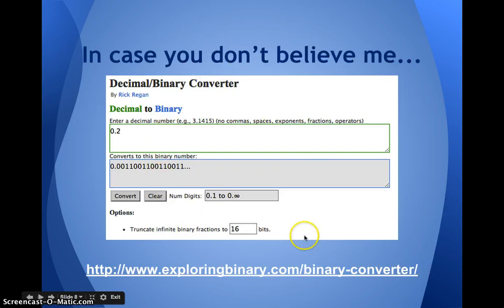I found a converter so that I wouldn't have to figure this out one place value at a time. I put in our 0.2, and it looks like, based on this infinity here and what you see up here, it's never going to stop. It looks like it goes on infinitely. So 0.2, our nice, easily written number in the decimal system, turns into an infinitely long sequence in the binary system.